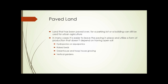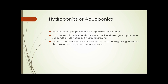Let's look at land that's unsuitable for agriculture because it's paved. If we find a nice plot of land but it's been paved for a parking lot or has a building foundation on it, in many cases it's easier to leave the paving in place and utilize a form of production that doesn't depend on open soil — hydroponics or aquaponics, raised beds, greenhouse and hoop house growing, or vertical gardens. Such systems don't depend on soil and are a good option when soil conditions don't permit in-ground growing, and they can be combined with a greenhouse or hoop house to extend the growing season or even grow year-round.